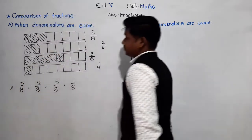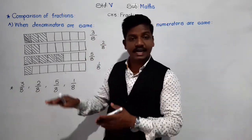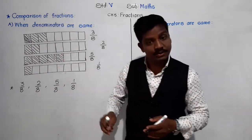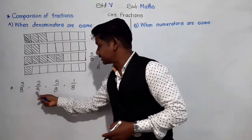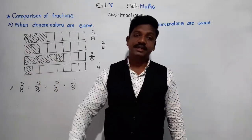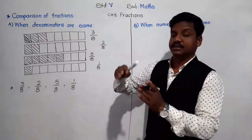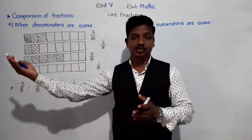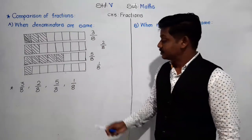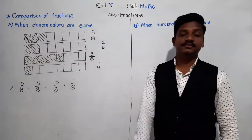If you observe these fractions, their denominators are the same — as we have the condition: comparison of fractions when denominators are same. These fractions all have denominator 8. We have to arrange them in ascending order and tell which is smallest, smaller, greater, and the greatest. Can you tell me which is the smallest fraction out of these four?